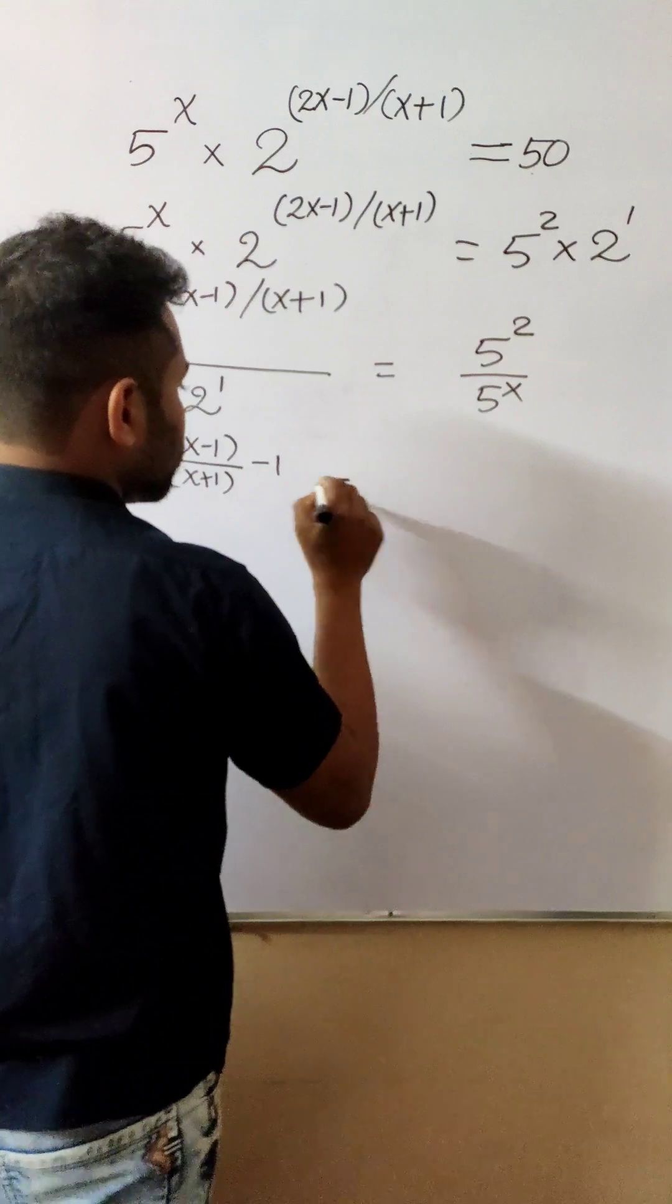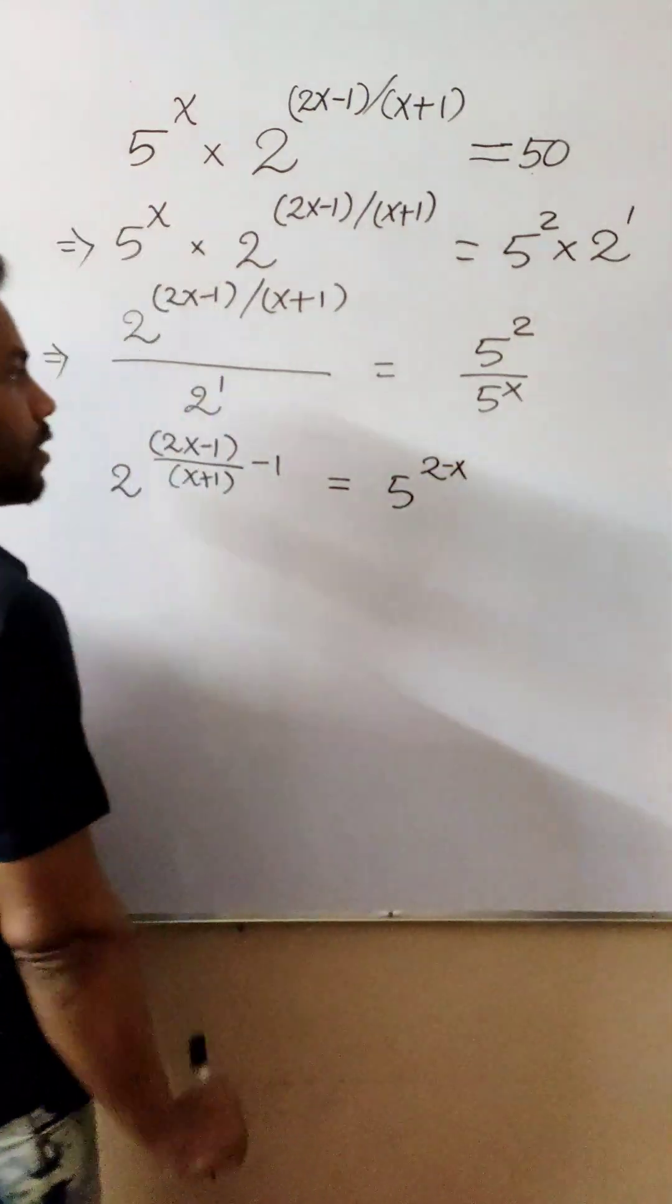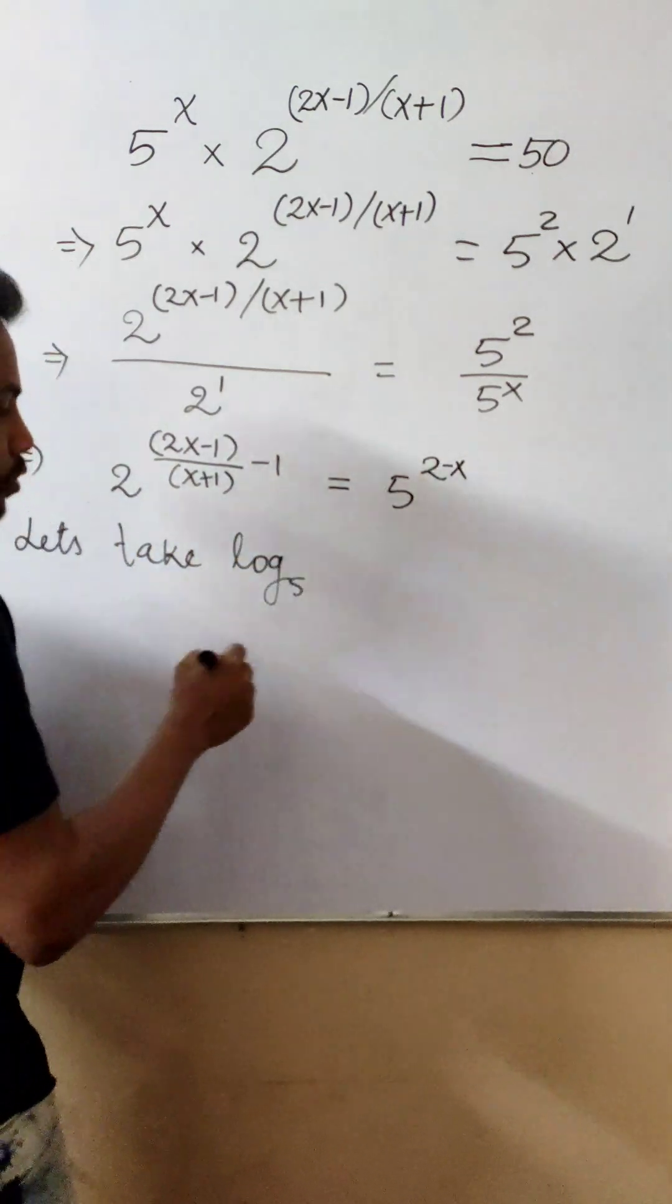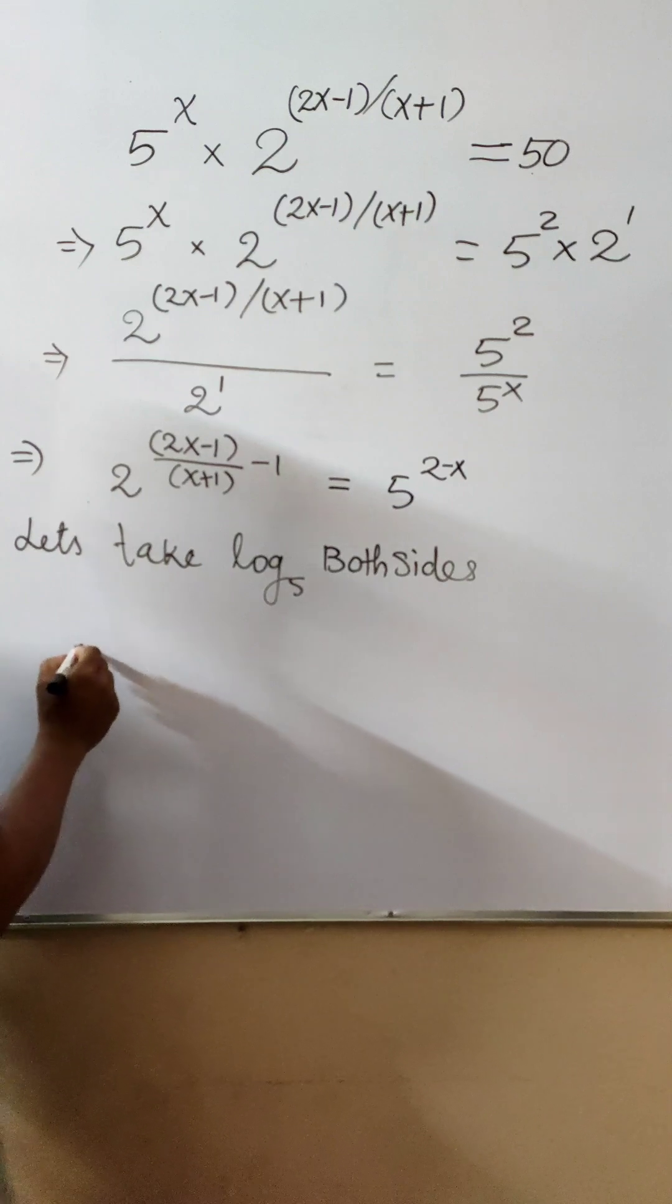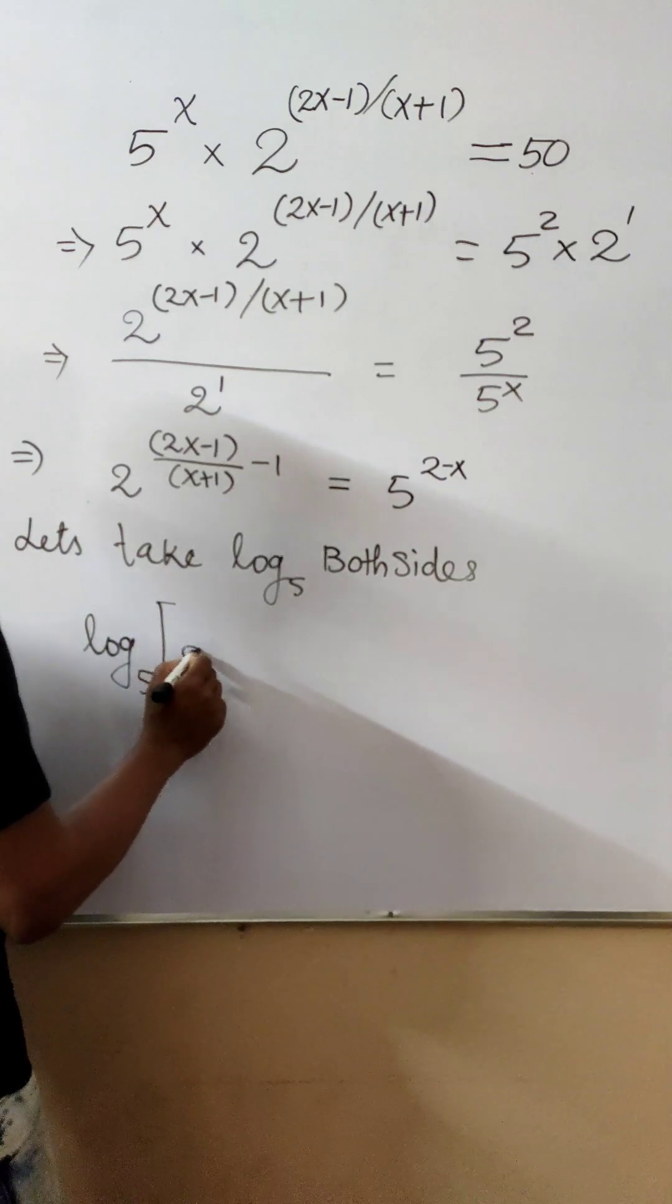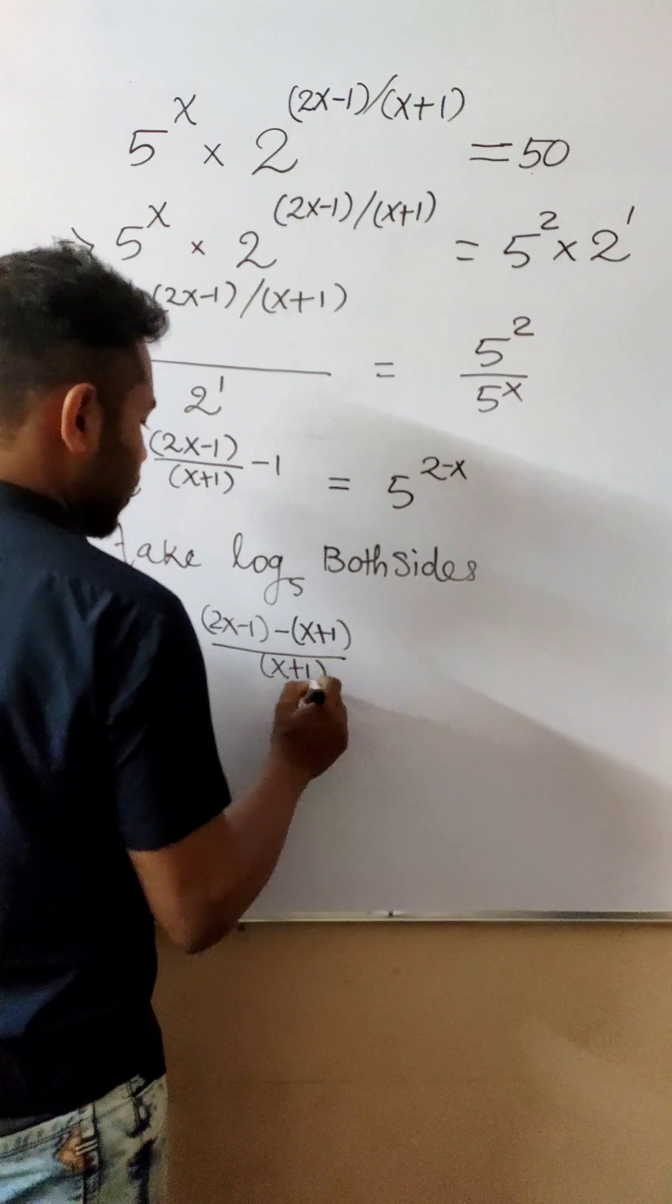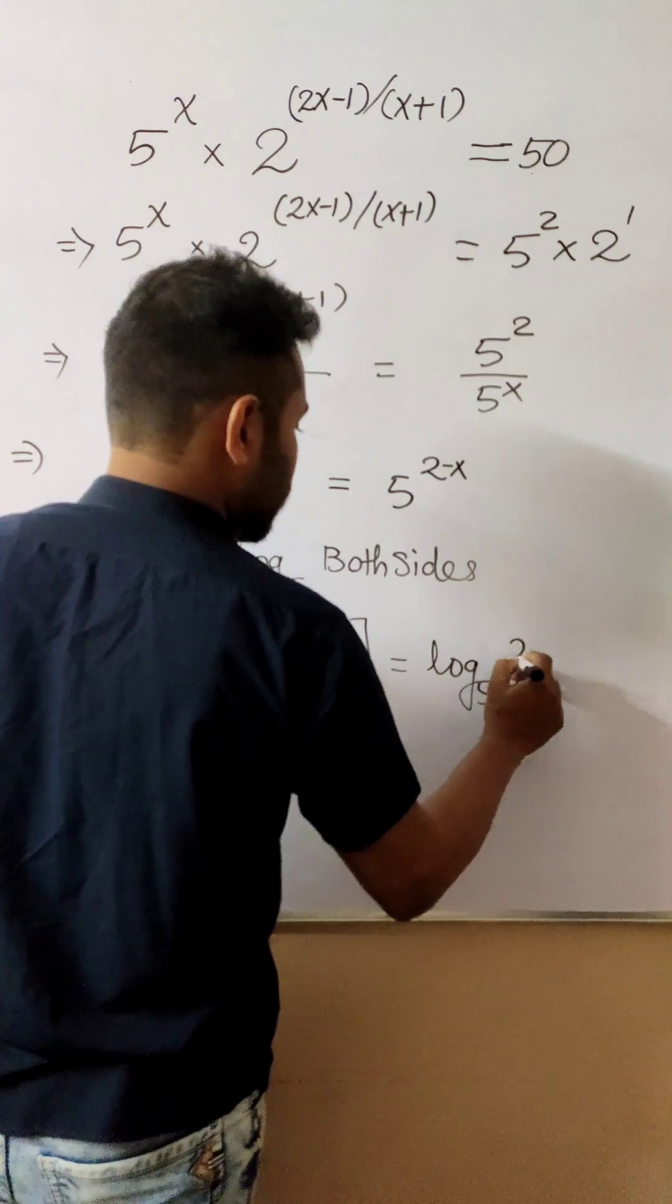This equals 5^(2-x). Now let's take log base 5 of both sides. So we have log₅ of 2^((2x-1-x-1)/(x+1)) equals log₅(5^(2-x)).